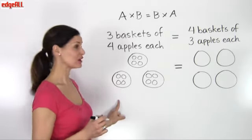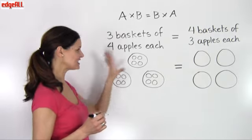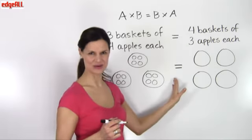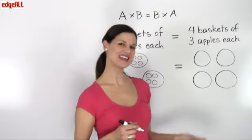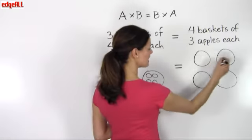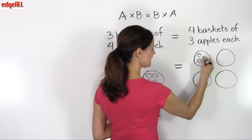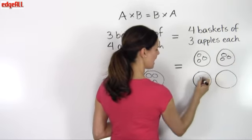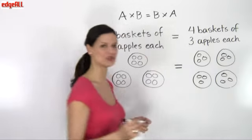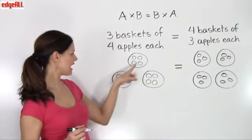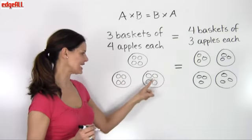The commutative property of multiplication tells us that that is equal to having four baskets of three apples each. So if in each of these four baskets I had three apples, I am going to come up with the same number of apples in each group. Here I have four, five, six, seven, eight, nine, 10, 11, 12.